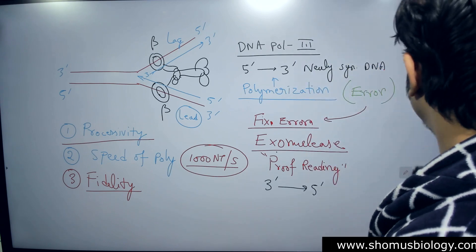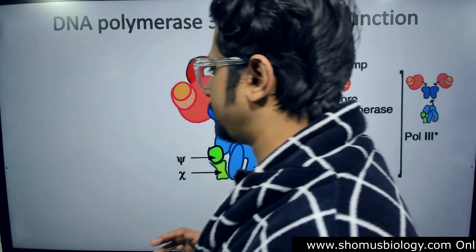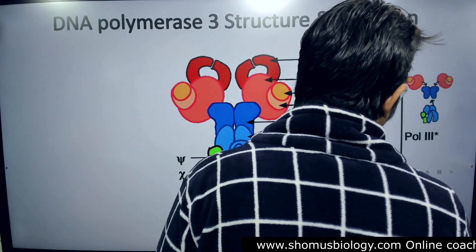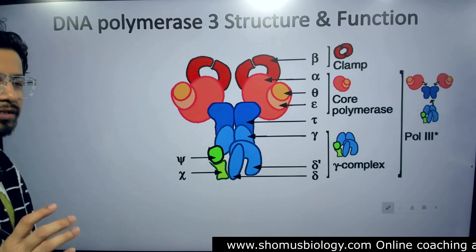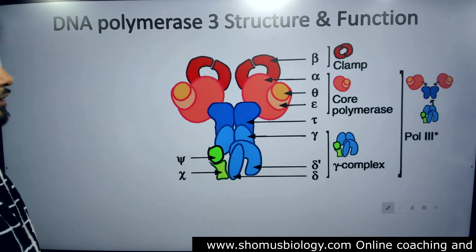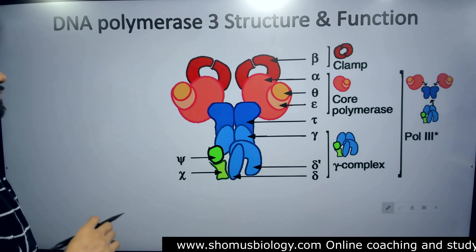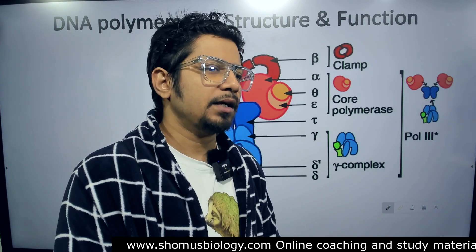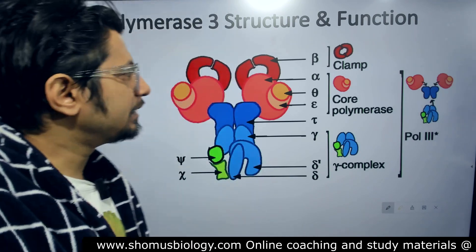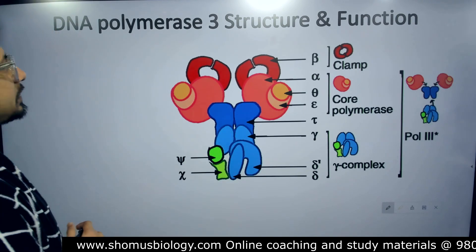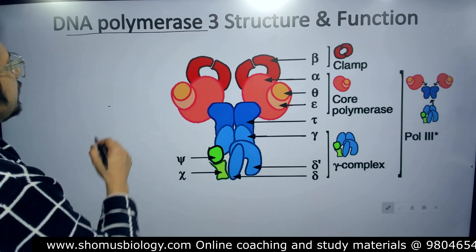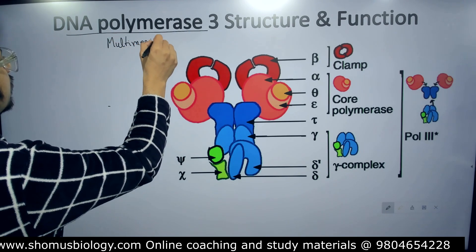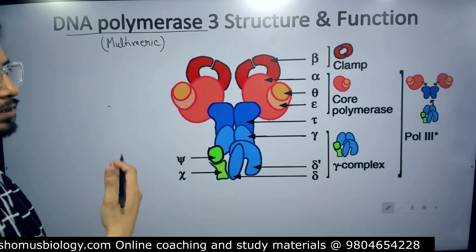Now I'll move to the structure of DNA Polymerase 3. I didn't start with the structure because this image may look scary, but it is not that difficult to understand. Any enzyme has a catalytic region or catalytic site with a subunit that carries that site. DNA Polymerase 3 is a multimeric enzyme, meaning it has multiple subunits.